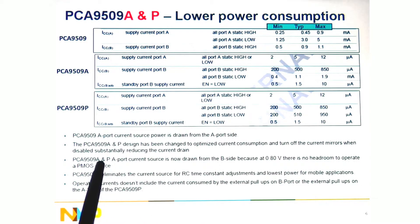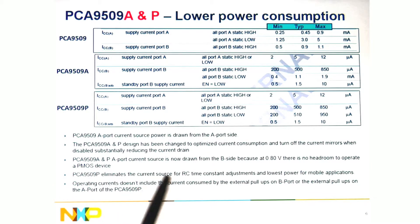The A and P current source is now drawn from the B side because at 0.8 volts on the A side there's no headroom to operate the PMOS device. The 9509P eliminates the current source entirely, so you set RC time constants for lowest power in portable applications. Note that the numbers in the tables don't include the operating current from the external pull-ups on either the A or B side.